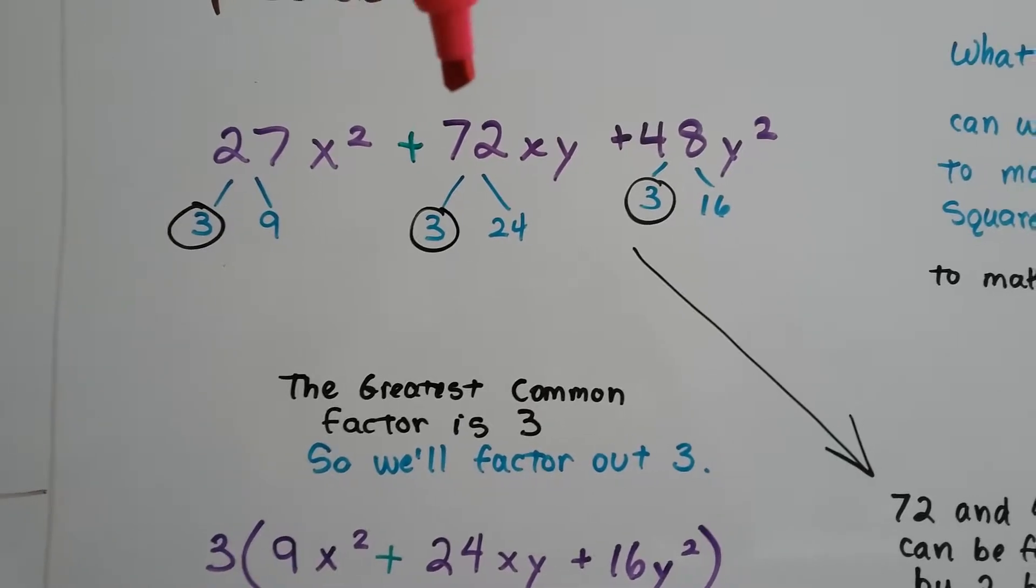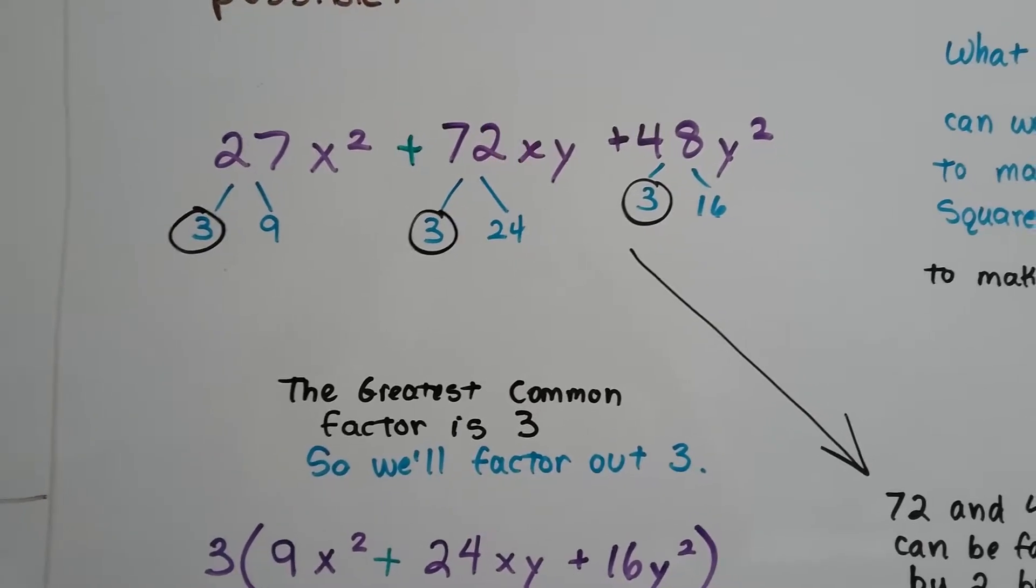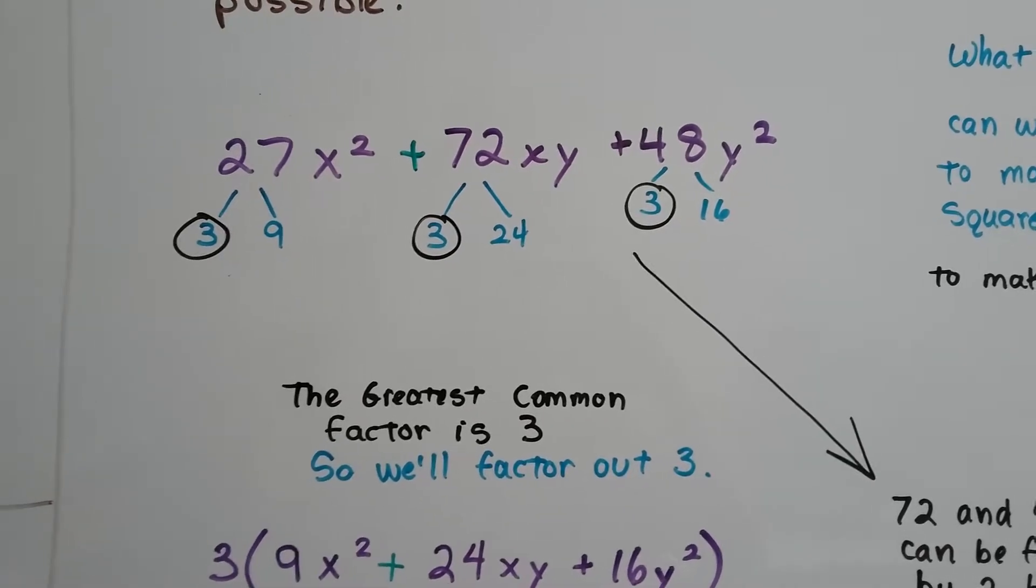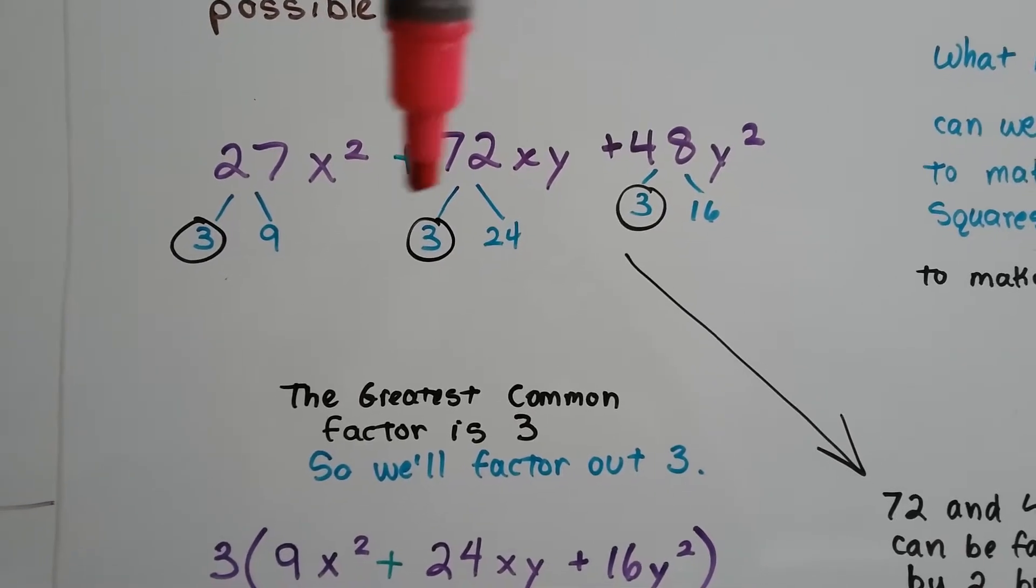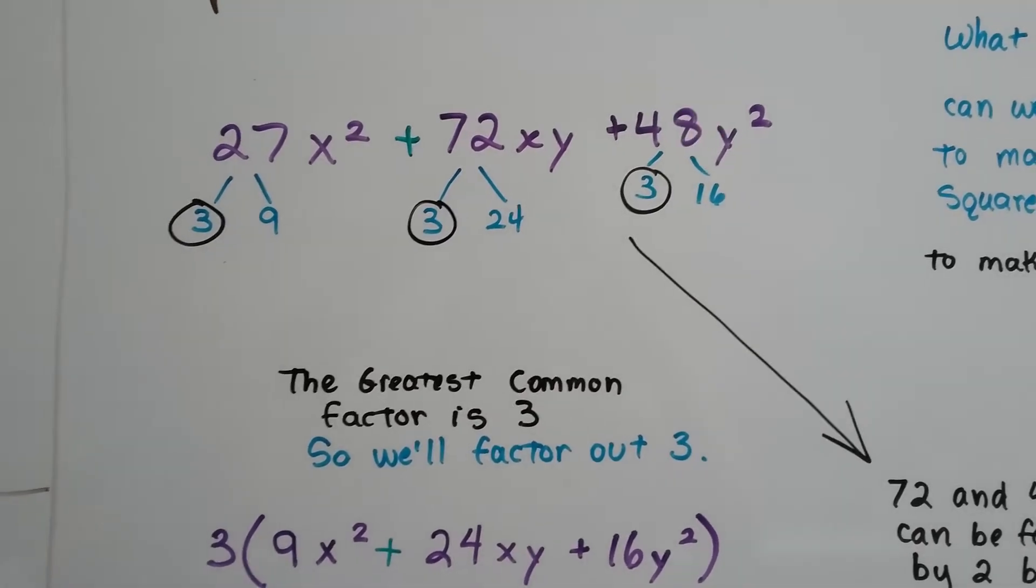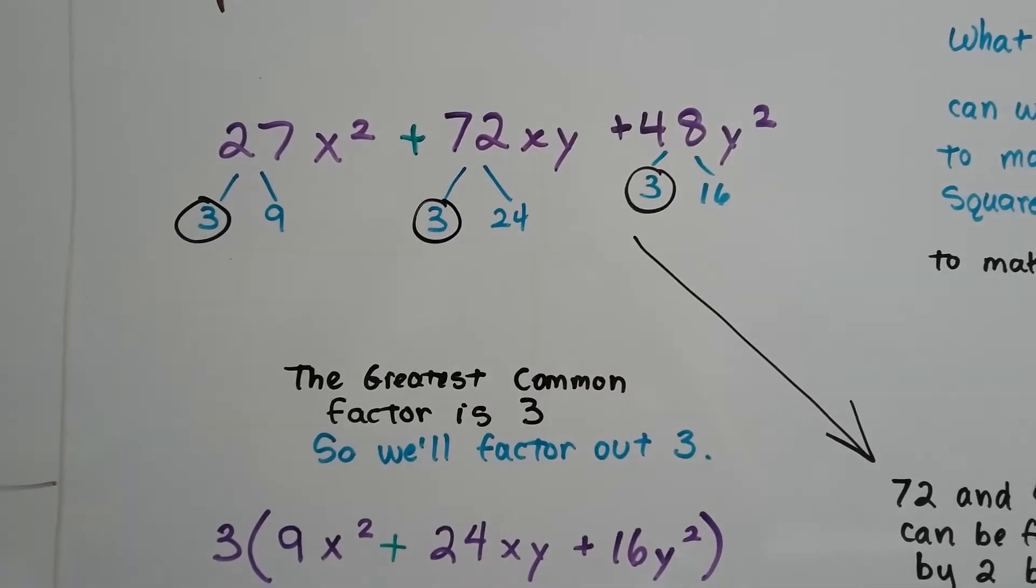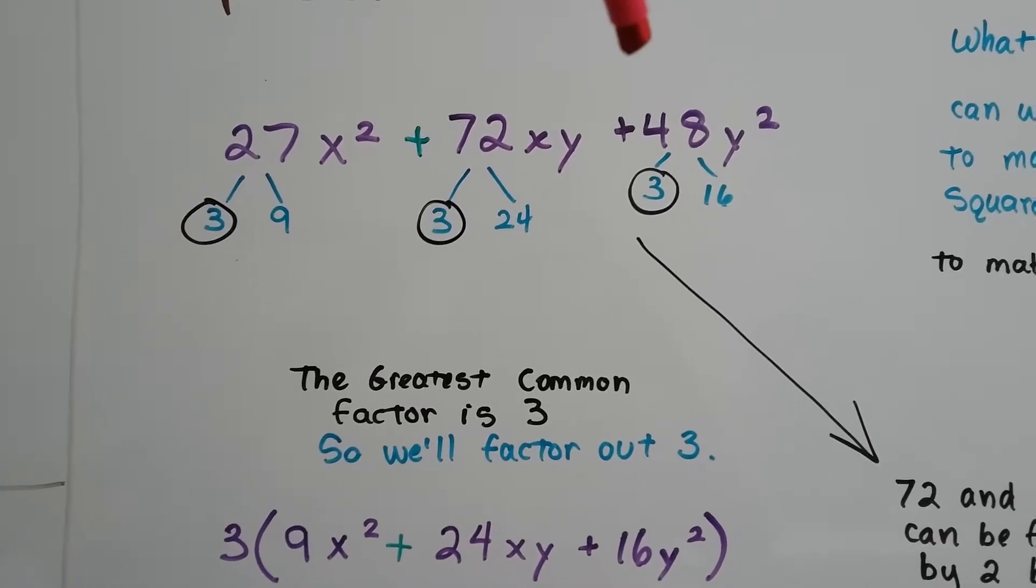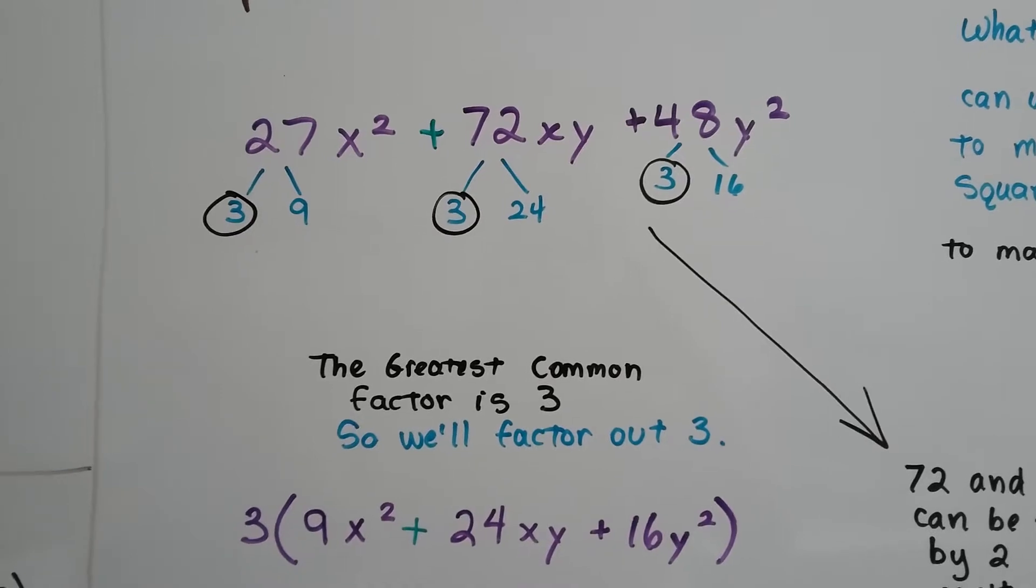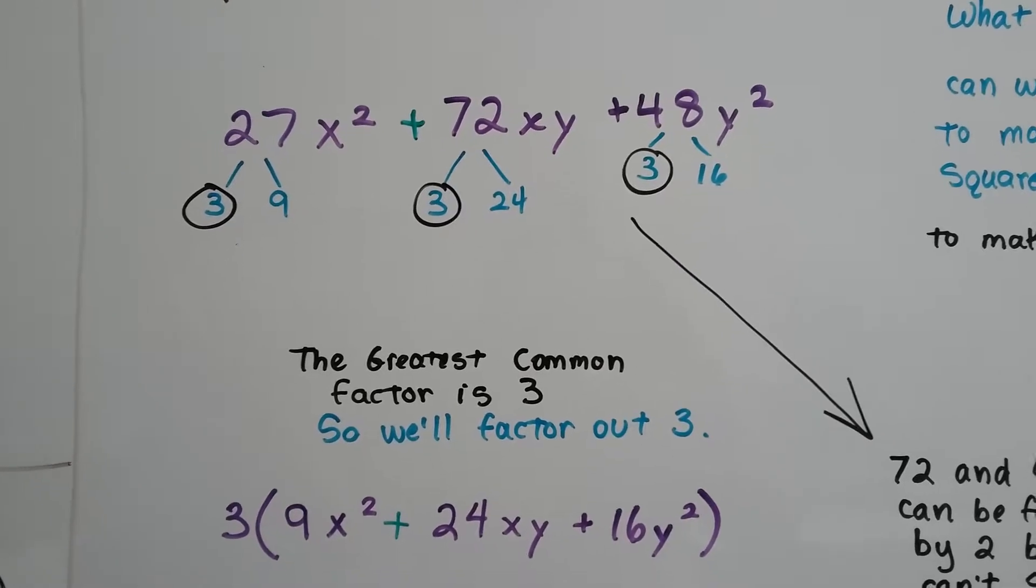So we know a 3 and a 24 would be factors for 72. And because we're using 3, we're going to do 48 divided by 3, and that gets us a 16. So we can use 3 and 16 as the factors for the 48. And what's the greatest common factor between them? 3. So we're going to factor out the 3.